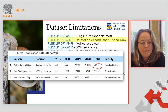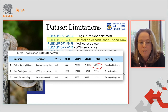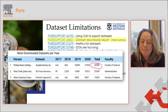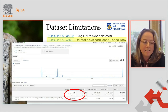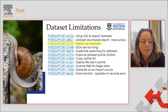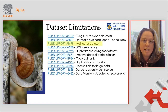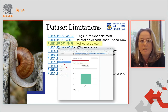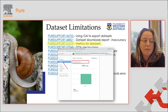Our current dataset download report suggests that records have been downloaded 43,000 times, but in Google Analytics it says they've been downloaded just 58 times. This is still in development, but we would like to add metrics to the datasets just as there are in this example with theses.